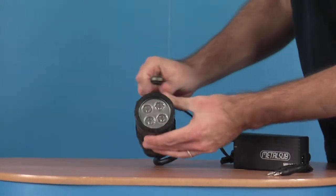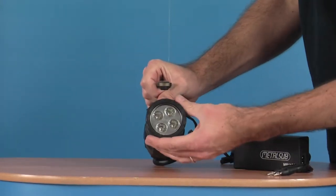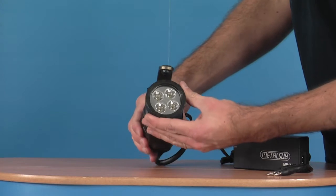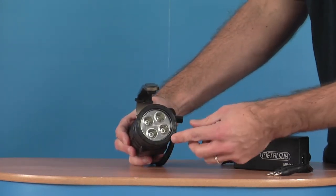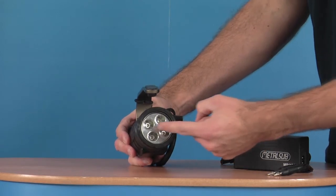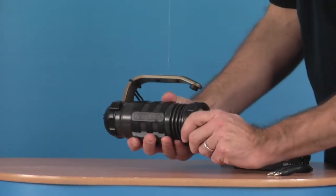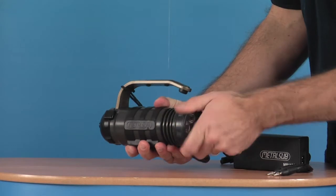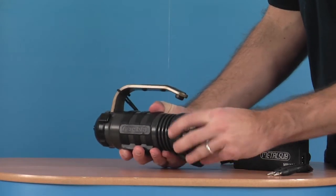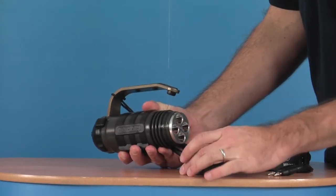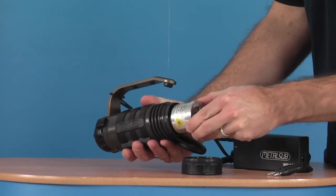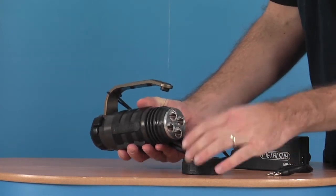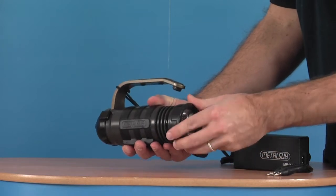So the torch itself, obviously here at the front we have the lighting module. This can actually be swapped out. There is a halogen version of this torch. This is the upgraded LED version. If you want to swap them out then you just unscrew this and you just take the head out and then replace it with the desired head that you want. The LED one is by far the most popular out of all of them.